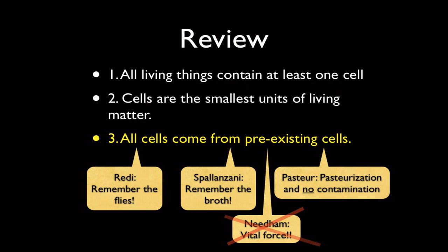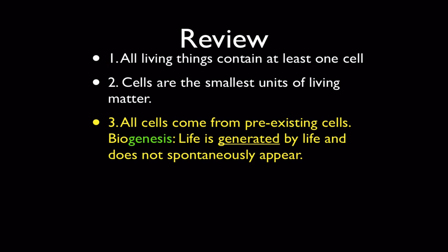To review: we've used the work of three scientists to support the third part of the cell theory — that all cells come from pre-existing cells. Redi showed this with flies, Spallanzani with his early broth experiments, and Pasteur with his later broth experiments using the specially shaped swan-neck flask. We can cross out Needham, because there is nothing magical about air that can bring things back to life. All living things come from pre-existing living things — this is the theory of biogenesis: life is generated by life and does not spontaneously appear.